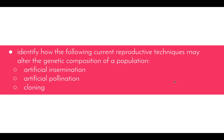Welcome to this video in the blueprint of life topic. This video is going to be looking at the dot point: identify how the following current reproductive techniques may alter the genetic composition of a population. We're going to look at what reproductive techniques entail overall, then examine three techniques in particular, along with their advantages and disadvantages in altering the genetic composition of a population.